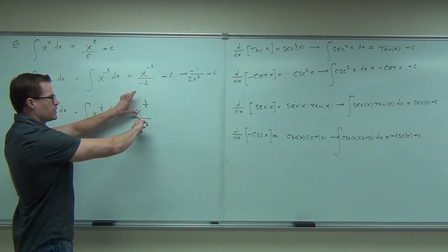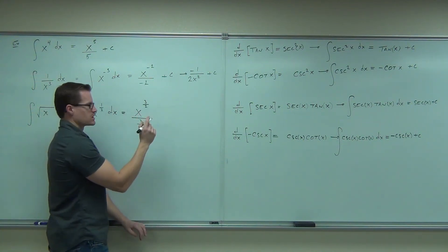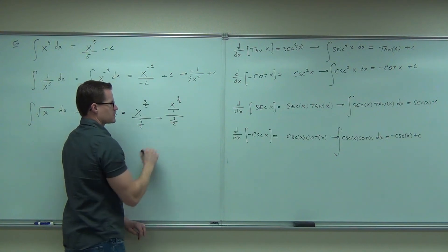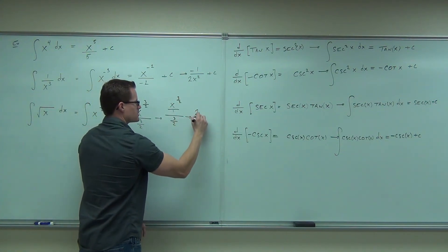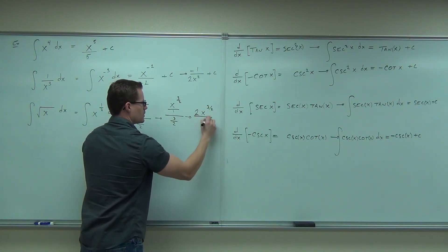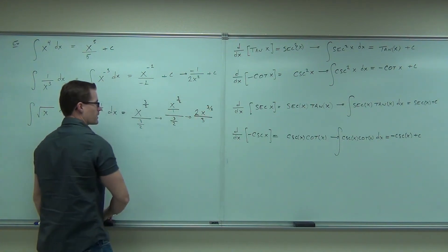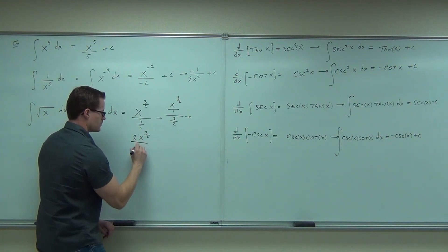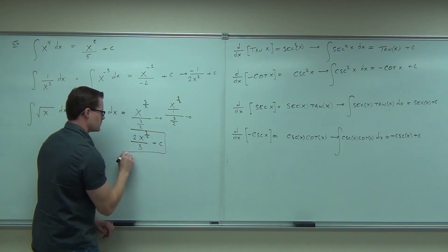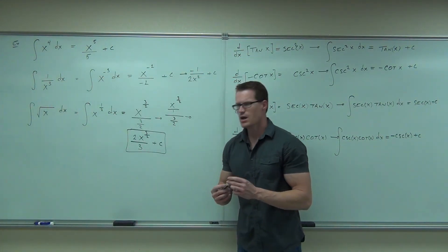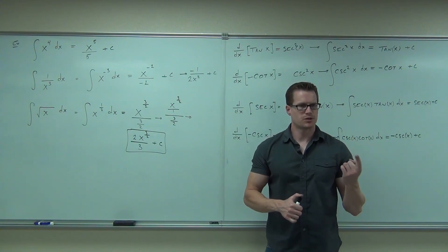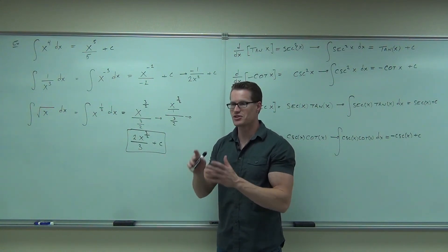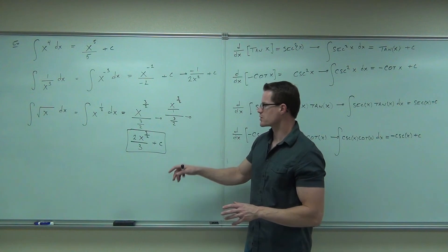So, that's x to the 3 halves over 1 divided by 3 halves. I'm never going to do this again. But you can see it this way. x to the 3 halves over 1 over 3 halves. Reciprocate and multiply. What you end up getting is 2x to the 3 halves over 3. I ran out of room. Sorry. Plus c.